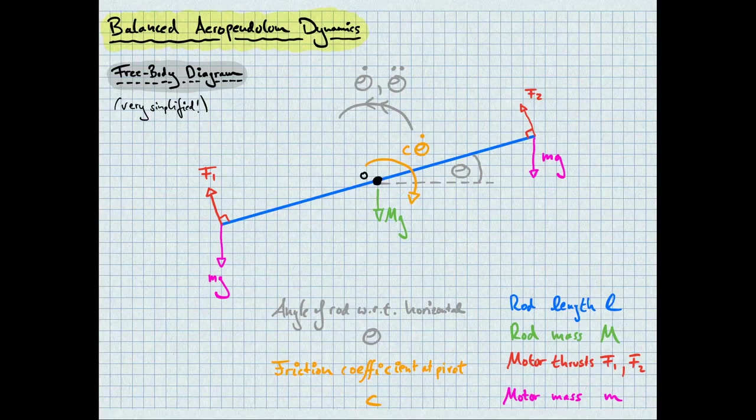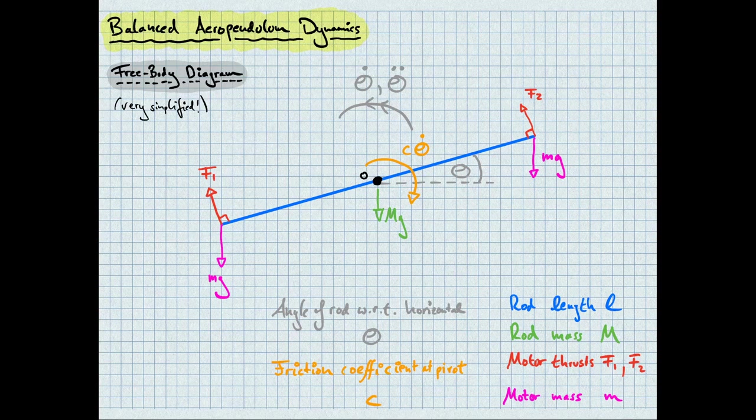Shown here is the free body diagram of the balanced aero pendulum, a rather simplified version. We assume that we have a thin rod of length L and of mass big M, rotating about a pivot at the rod's centre, which is this point O. The angle that the rod makes with a horizontal is denoted by theta. At either end of the rod are motors with propellers, modelled as point masses, each of mass little m, and each providing a thrust force F1 and F2.